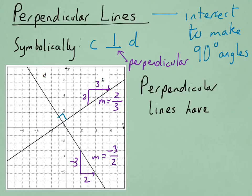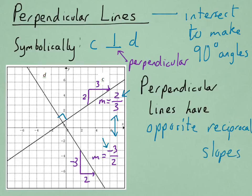So, how are these slopes related? Well, it turns out that you see that they have opposite signs. The slope of line C is positive, whereas the slope of line D is negative. And the numerator became the denominator, and the denominator became the numerator. We call this having opposite reciprocal slopes.